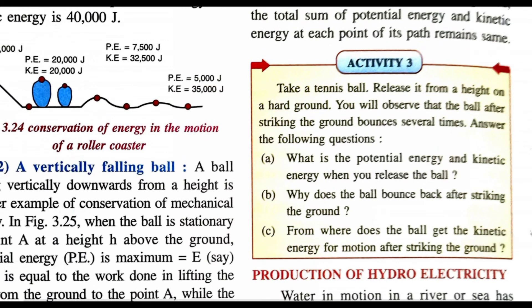Activity 3: Take a tennis ball and release it from a height onto hard ground. You will observe that the ball bounces several times after striking the ground. Questions to answer: What is the potential energy and kinetic energy when you release the ball? Why does the ball bounce back after striking the ground? After striking the ground, the energy is converted — kinetic energy changes to potential energy and then back to kinetic energy. From when does the ball get kinetic energy? When it touches the ground, it converts into kinetic energy, and there will also be a striking sound.